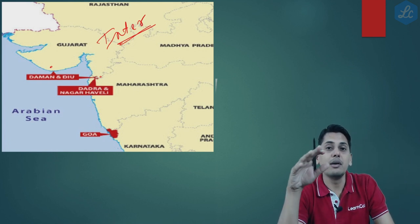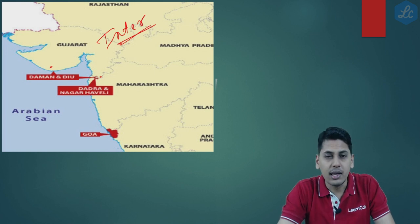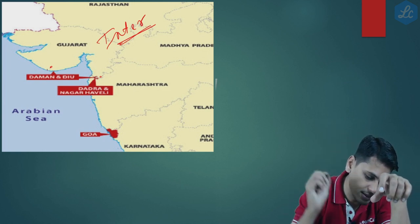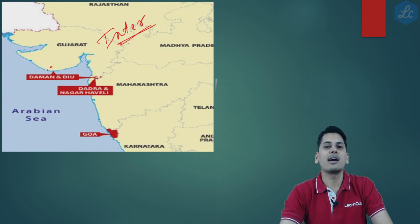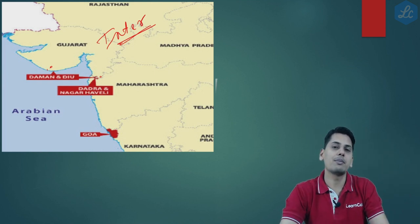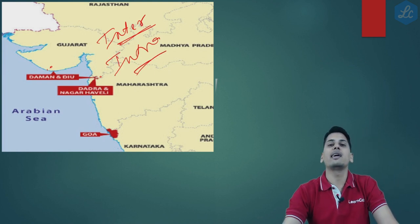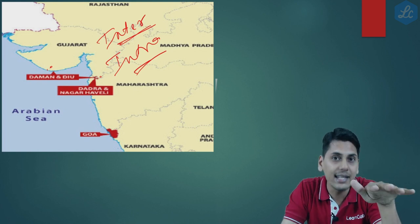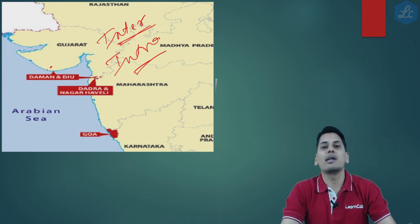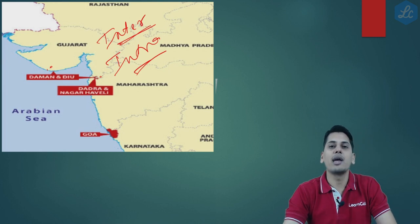However, in the post-amendment scenario, if a person is supplying goods from Daman and Diu to Dadra and Nagar Haveli, it will not be called an interstate supply. Although geographically they are located at different places, they are treated as the same union territory. The location of supplier and place of supply is within the same union territory, so post amendment this supply will be called an intrastate supply, because Daman and Diu has been merged with Dadra and Nagar Haveli.